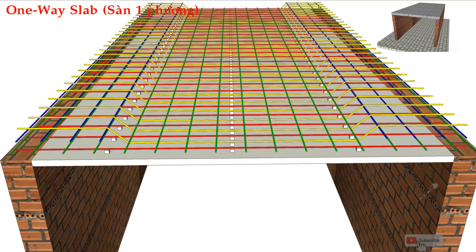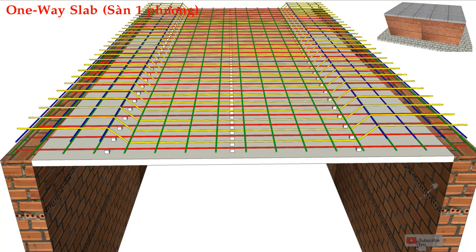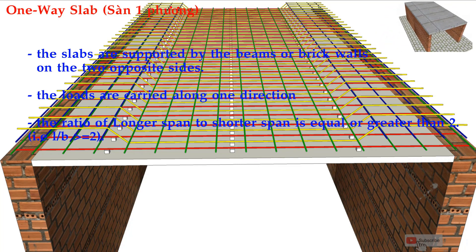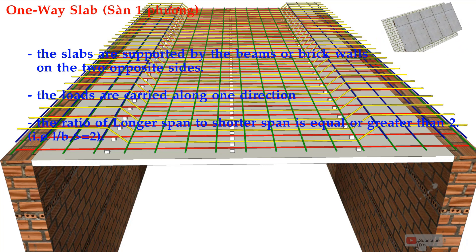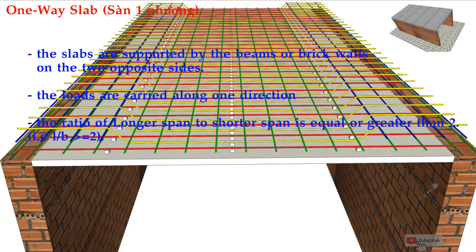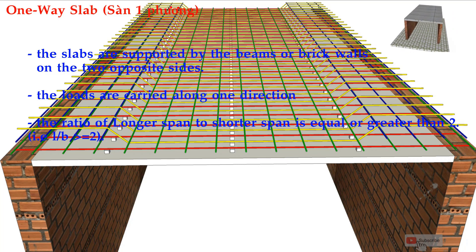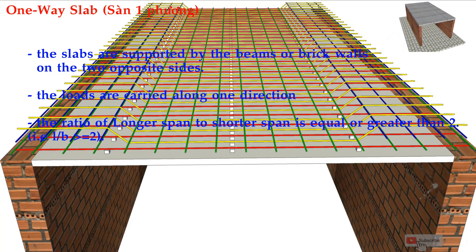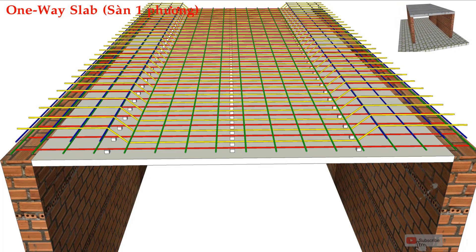In one-way slab, a one-way slab is a slab which is supported by beams or brick wall on the two opposite sides to carry the load along one direction. In one-way slab, the ratio of the longer span to shorter span is equal to or greater than two, and the main reinforcement spans in the shorter direction.